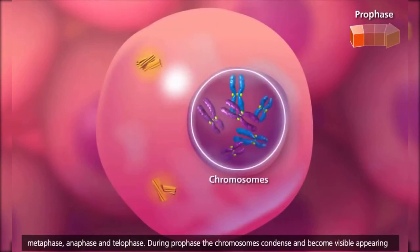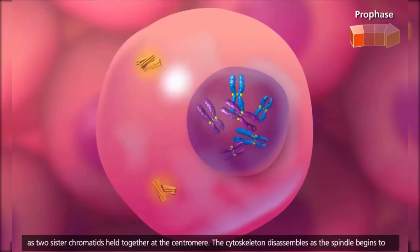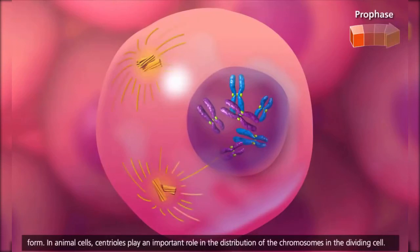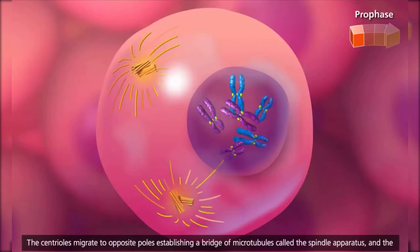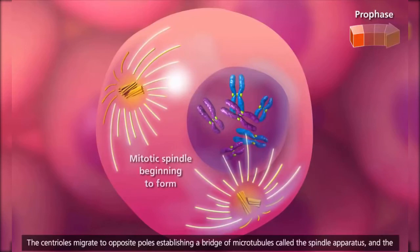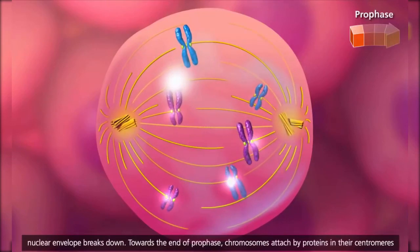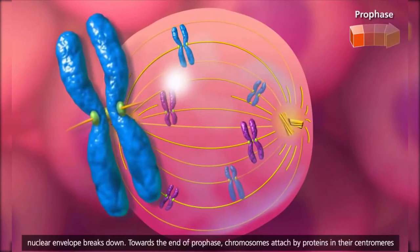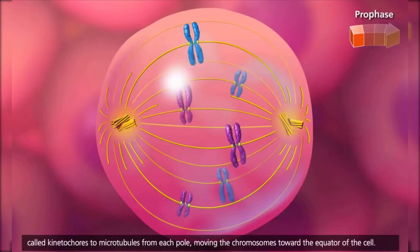During prophase, the chromosomes condense and become visible, appearing as two sister chromatids held together at the centromere. The cytoskeleton disassembles as the spindle begins to form. In animal cells, centrioles play an important role in the distribution of chromosomes. The centrioles migrate to opposite poles, establishing a bridge of microtubules called the spindle apparatus, and the nuclear envelope breaks down. Towards the end of prophase, chromosomes attach by proteins in their centromeres called kinetochores to microtubules from each pole, moving the chromosomes toward the equator of the cell.